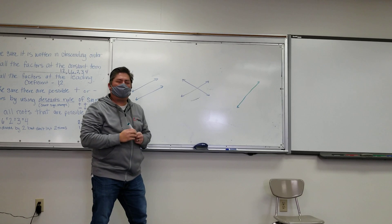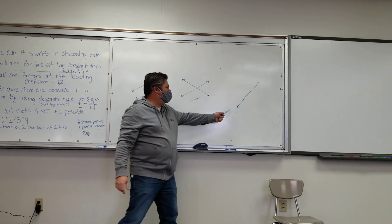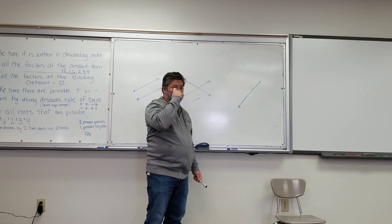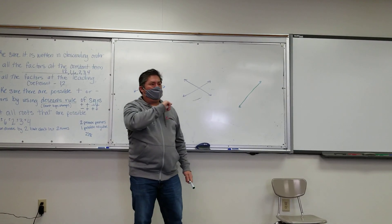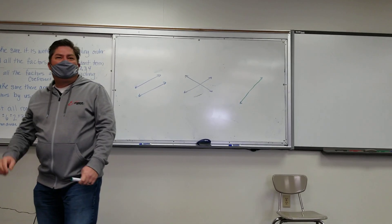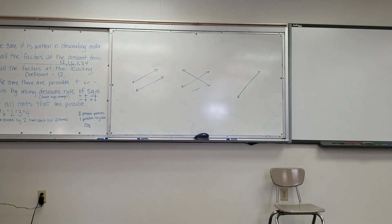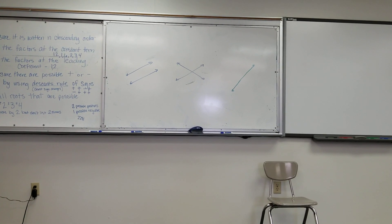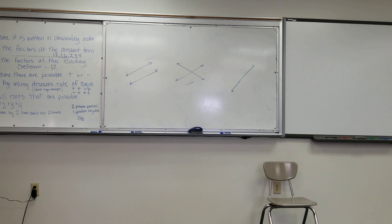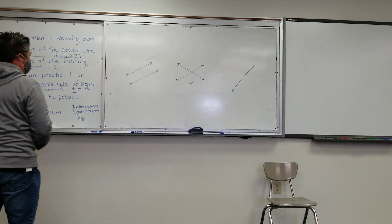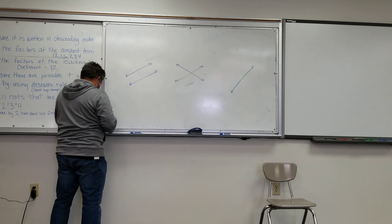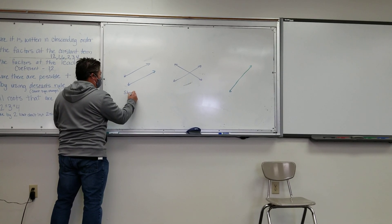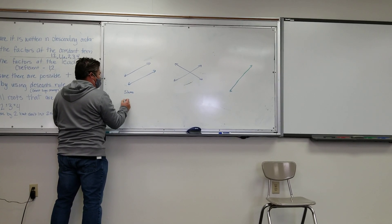You could also have two lines that are exactly the same line. Put these three in your notes — these are the three things that can happen with two lines when you graph them. Now let's talk about slopes and solutions.